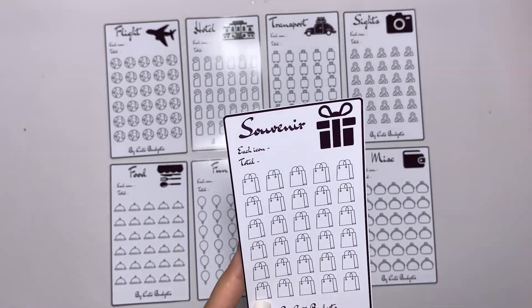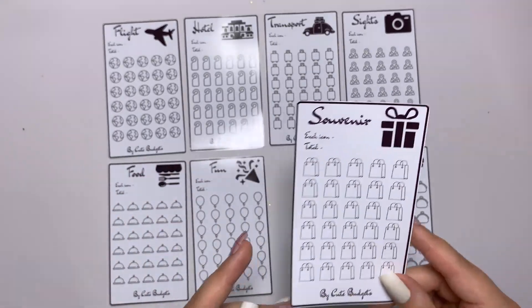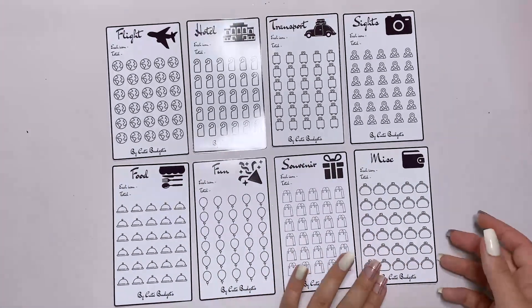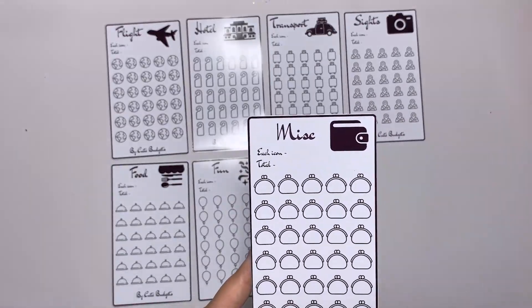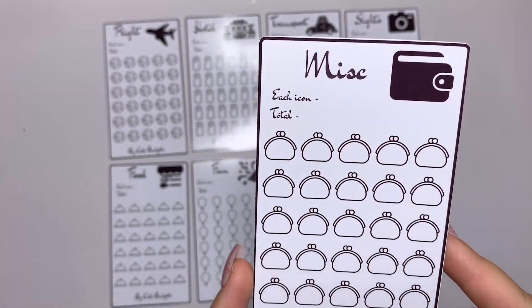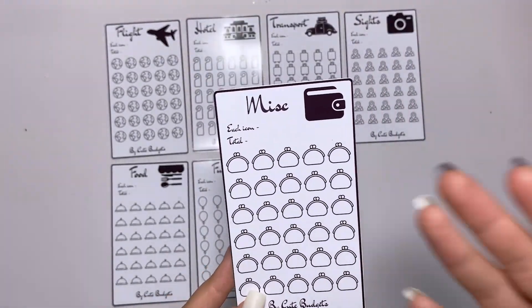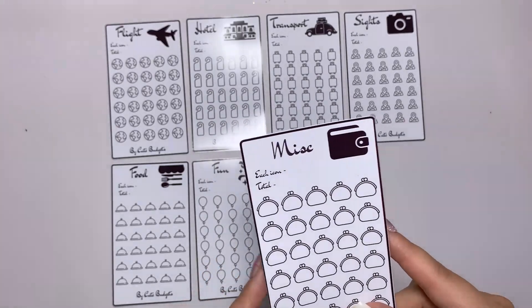And the last one is miscellaneous. Of course you cannot calculate everything. Whenever you go on vacation, usually it costs more than what we have in our pocket. That's why we have miscellaneous.